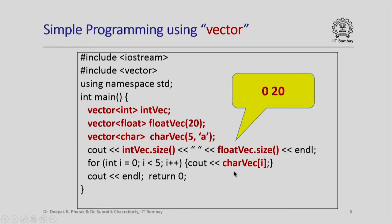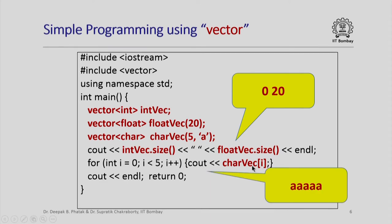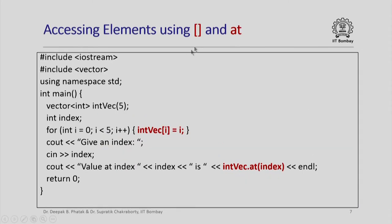If I print out the elements of 'char_vec', note that I access them just like a normal array using the square bracket operator. This is an interesting feature of the vector class: once you have declared a vector of a certain type, you can access its elements just like a normal array. Printing 'char_vec' gives five A's, since all elements were initialized with the ASCII code of 'A'.